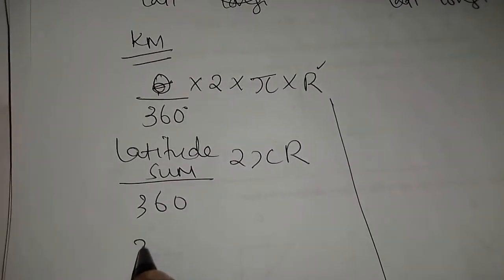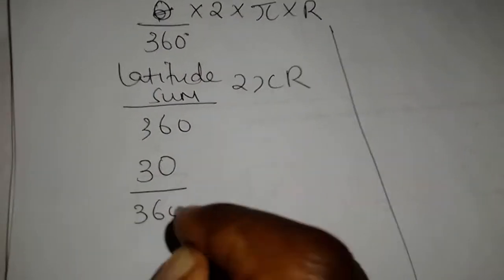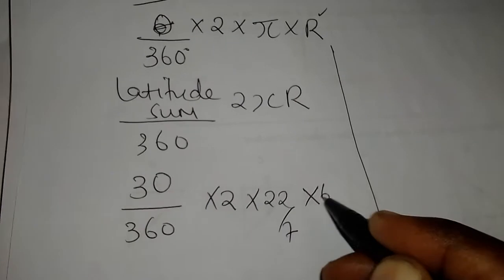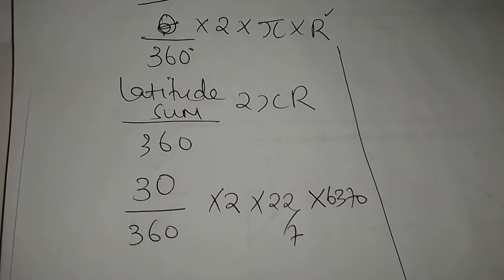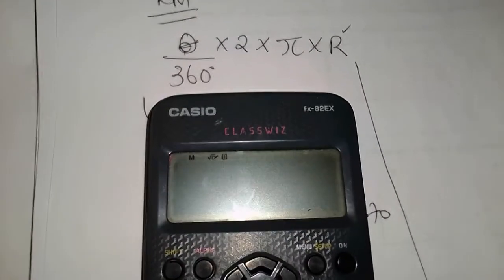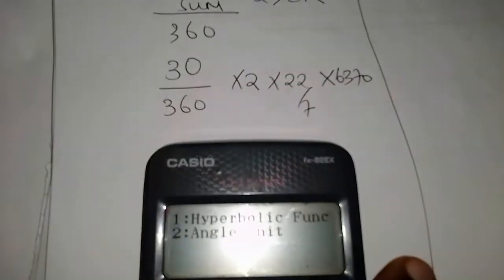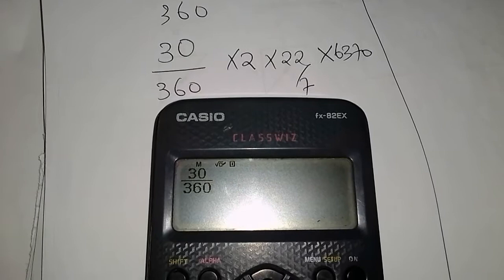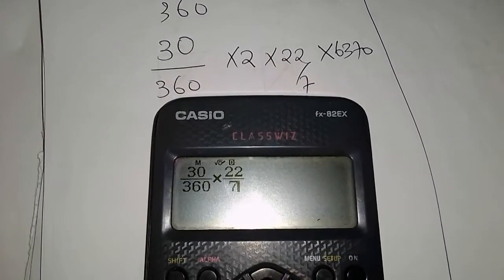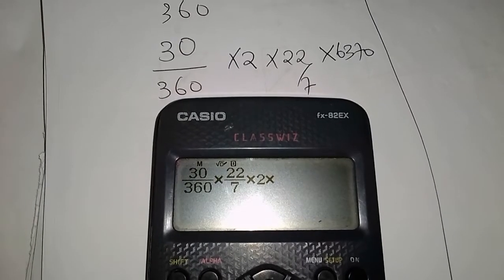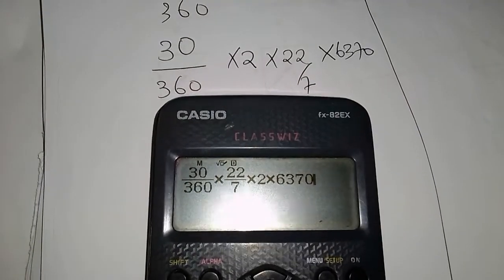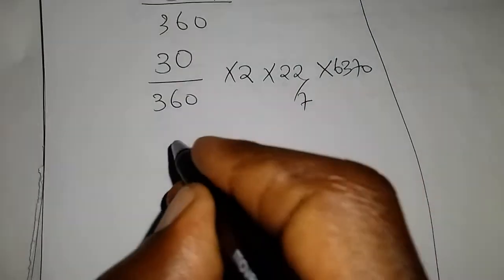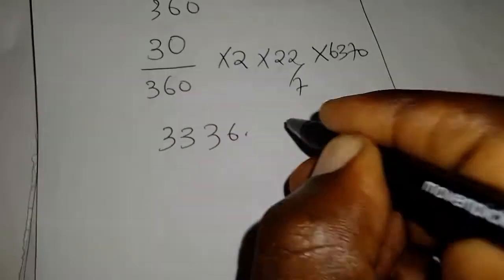Okay, so latitude sum. So we'll say 20 plus 10, which is 30. So it's going to give us 30 divided by 360 multiplied by 2 multiplied by 22 over 7 multiplied by radius 6370. So it's going to be my answer in this case. So I'll say 30 divided by 360 multiplied by 22 over 7 multiplied by 2 multiplied by 6370. So my answer is 3336.67 kilometers.